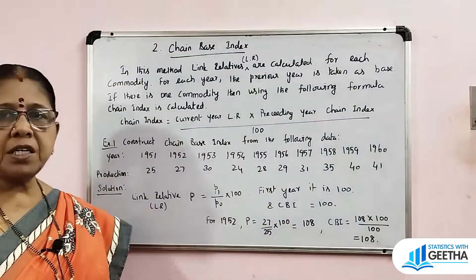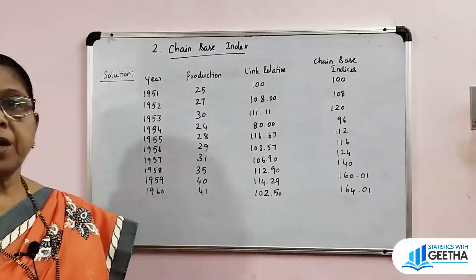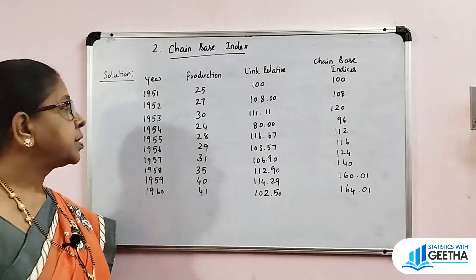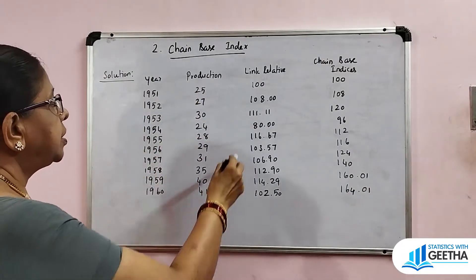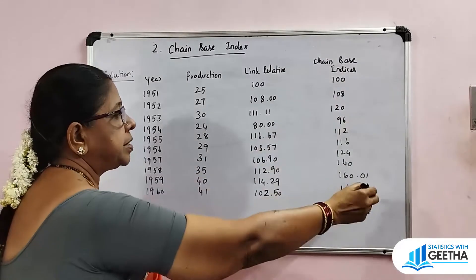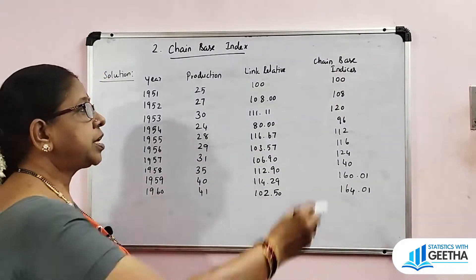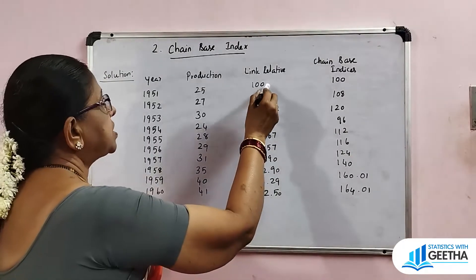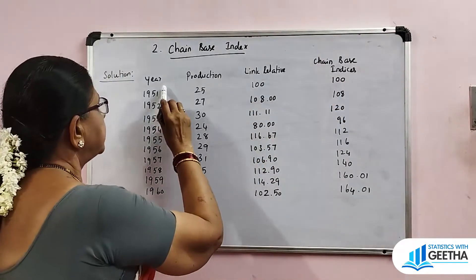We will prepare a table with the chain index. The table has columns: year, production, link relative, and chain-based index. The first year value is 100, and the chain index for the first year is also 100.